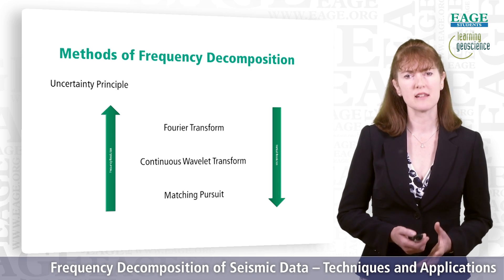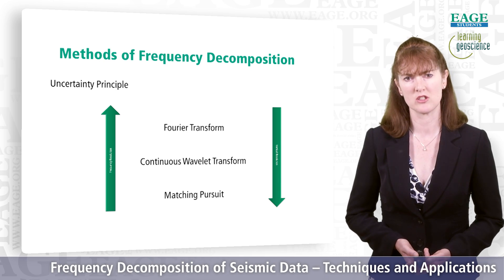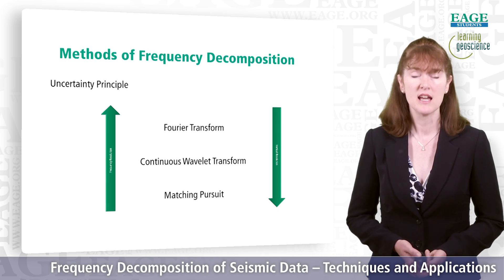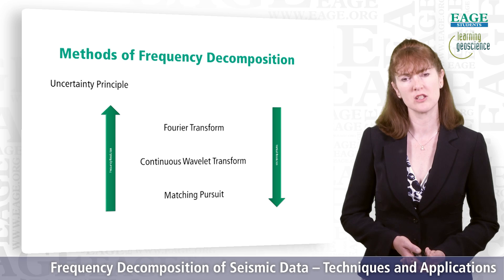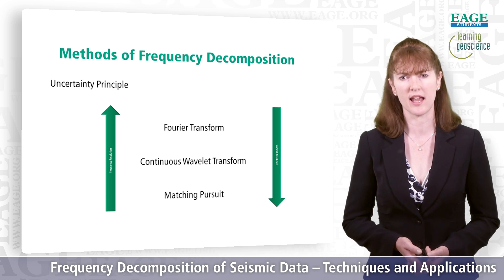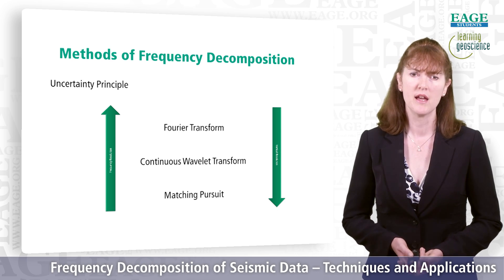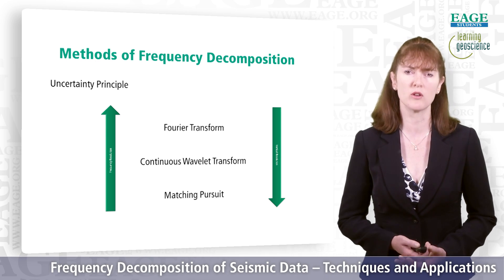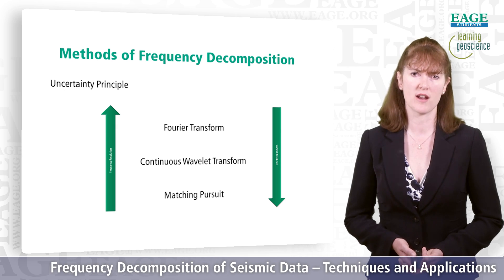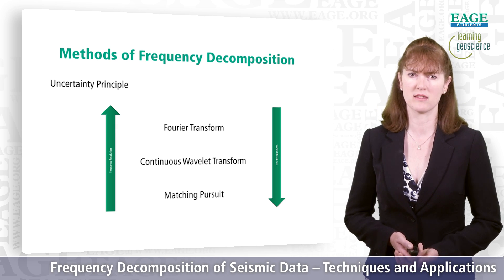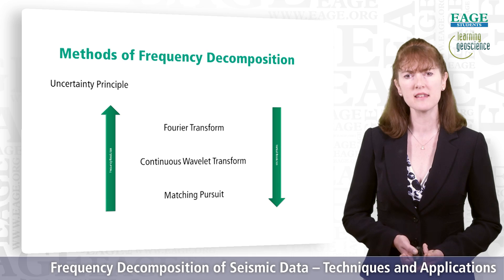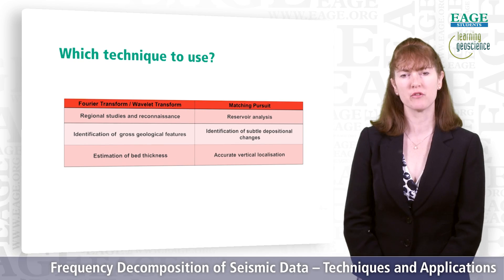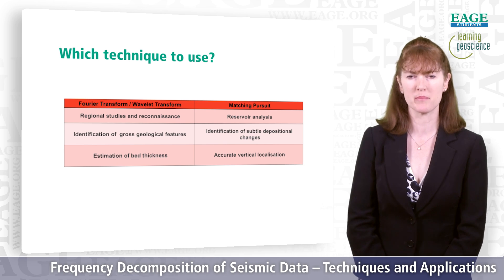It's important to understand the different methods of frequency decomposition, because they all have their advantages and disadvantages. There's always a trade-off between frequency resolution and vertical resolution, governed by the uncertainty principle. The three types used most commonly with seismic data are the Fourier transform, continuous wavelet transform, and matching pursuit — and it's important to use the right technique for your interpretation objectives.